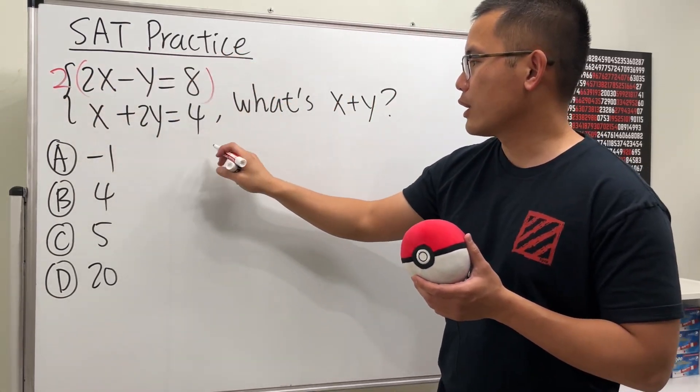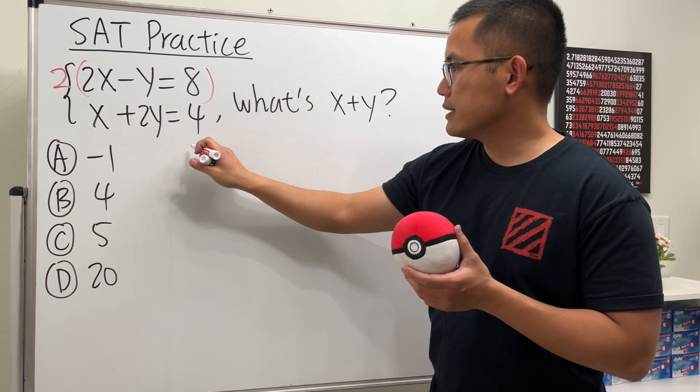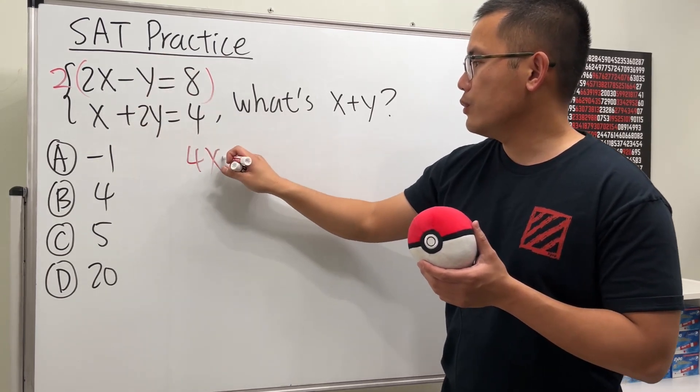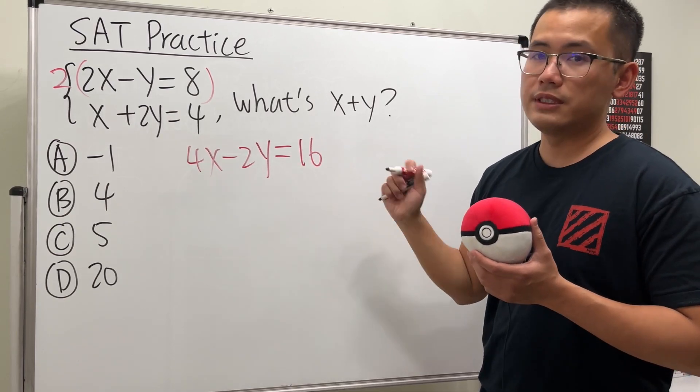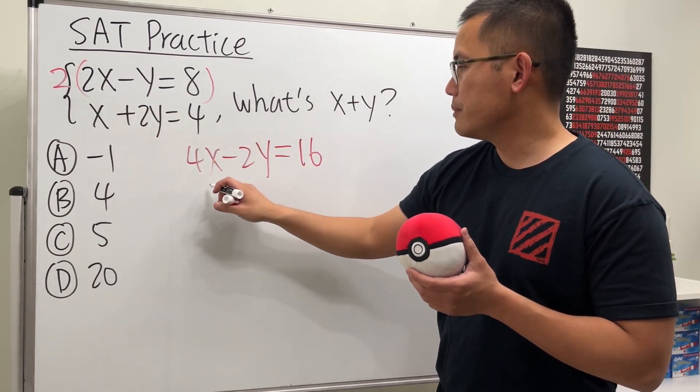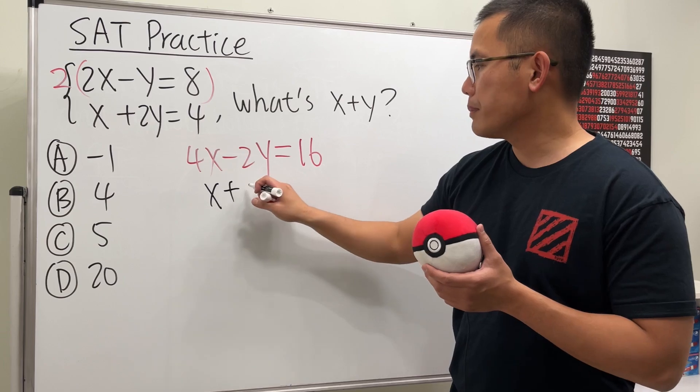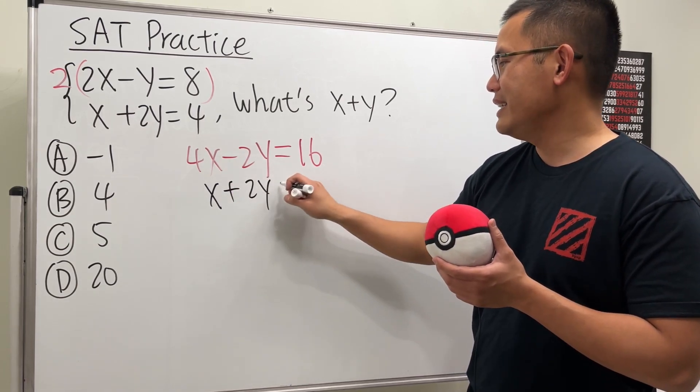So I will put that down right here: 2 times 2x is 4x, and then continue, we have minus 2y, and that's equal to 2 times 8 which is 16. And the bottom equation I will just keep it: x plus 2y equals 4.